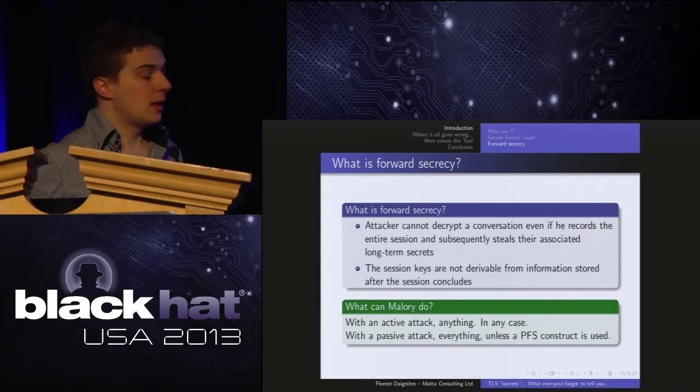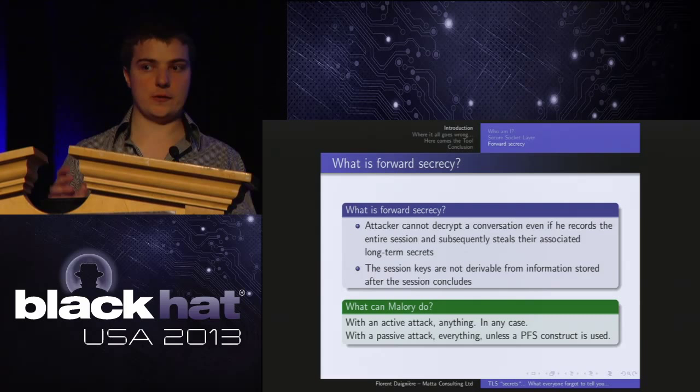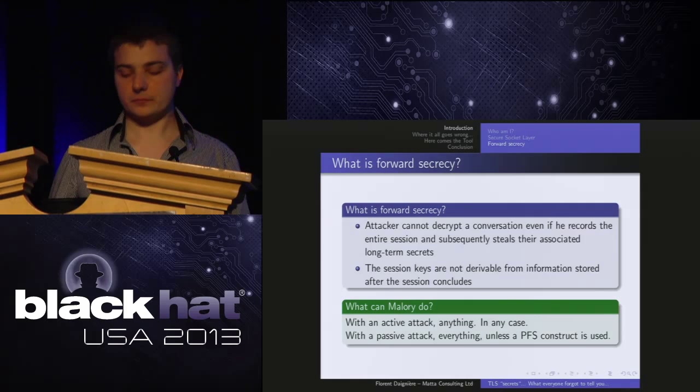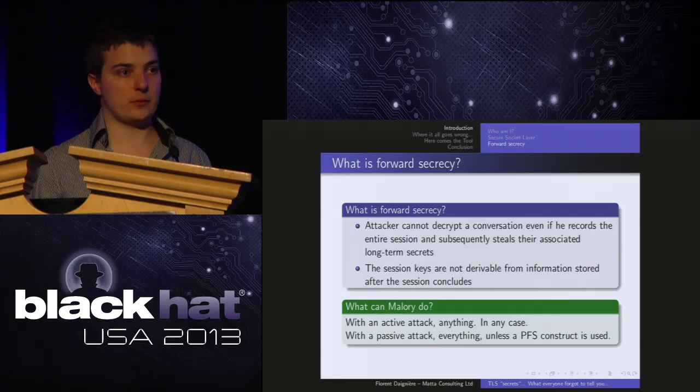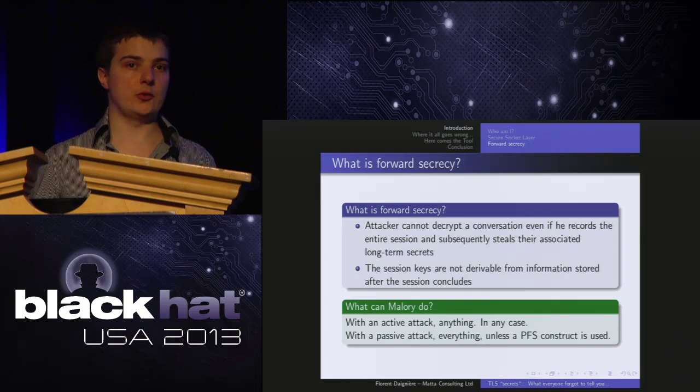In practice, what does that mean? In cryptography we use the schema where Alice wants to talk to Bob and Mallory is a bad guy. What can Mallory do if an exchange is done with a cryptosystem aimed at forward secrecy? With an active attack, you can do anything. But with a passive attack, if PFS is in use, you shouldn't have been able to recover the plain text — even if the keys, certificates, and so on have been compromised.